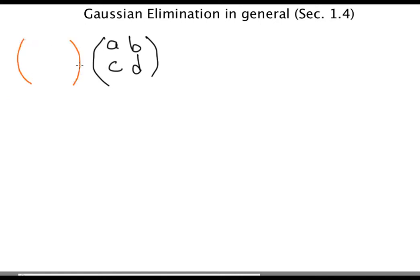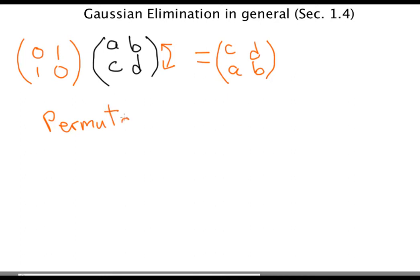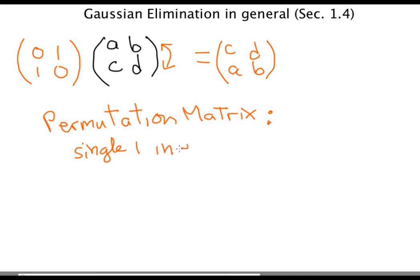Let's look more carefully at the operation of switching rows. For example, for a 2x2 matrix, what is the matrix operation which switches the first and second rows? You multiply on the left by the matrix 0, 1, 1, 0 — because when you do this multiplication, you get c, d in the first row and a, b in the second. In general, a permutation matrix is one which has this effect: it switches rows around. By definition, a permutation matrix is one with a single 1 in each row and column.